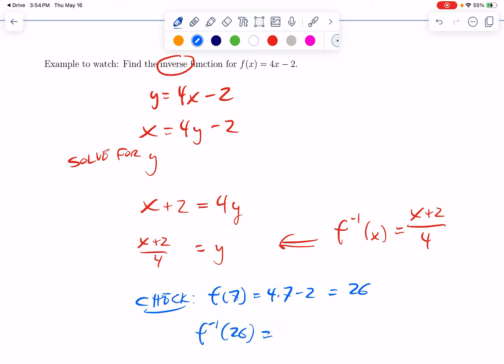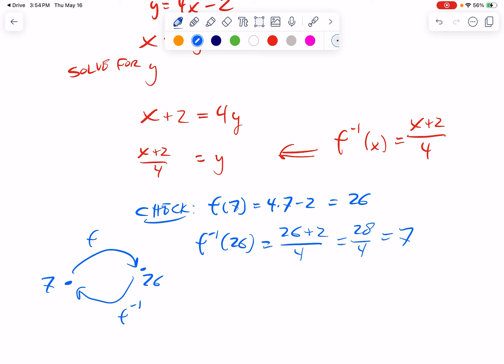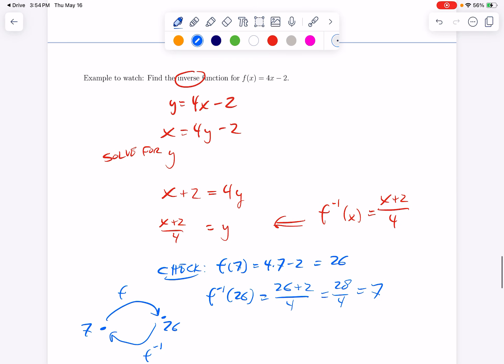Let's see if f inverse has the reverse relationship. f inverse of 26, according to this formula, would be 26 plus 2 over 4. That's 28 over 4, which is 7. So, that's what we want to see. One function started with 7 and turned it into 26. The other function started with 26 and turned it into 7. The chances that this worked out by dumb luck, especially after all these steps, pretty much zero.